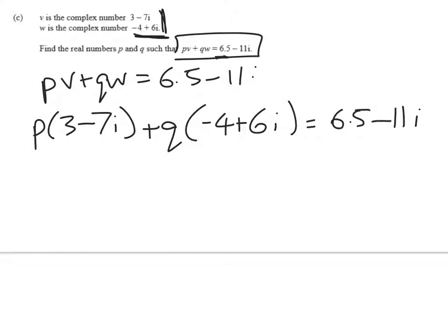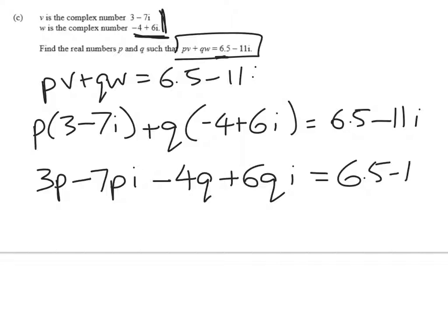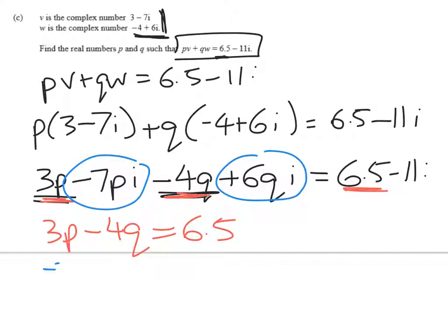So we're going to match the real parts and we're going to match the imaginary parts. So we have 3p minus 7pi minus 4q plus 6qi equals 6.5 minus 11i. The real part, these two added together, gives me 3p minus 4q. I'm matching that to the 6.5. That equals 6.5. And now the imaginary part, negative 7p plus 6q will give me negative 11.